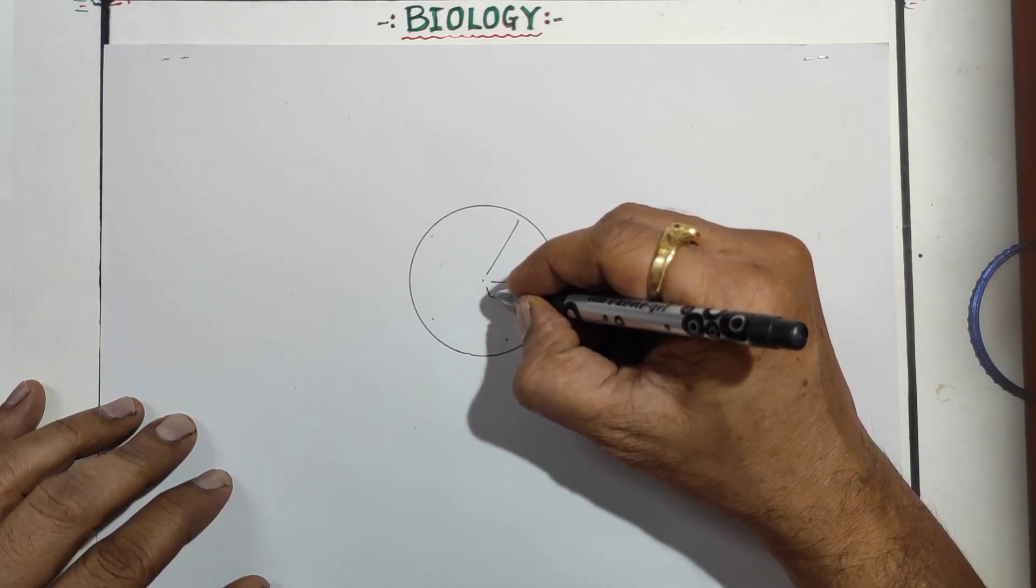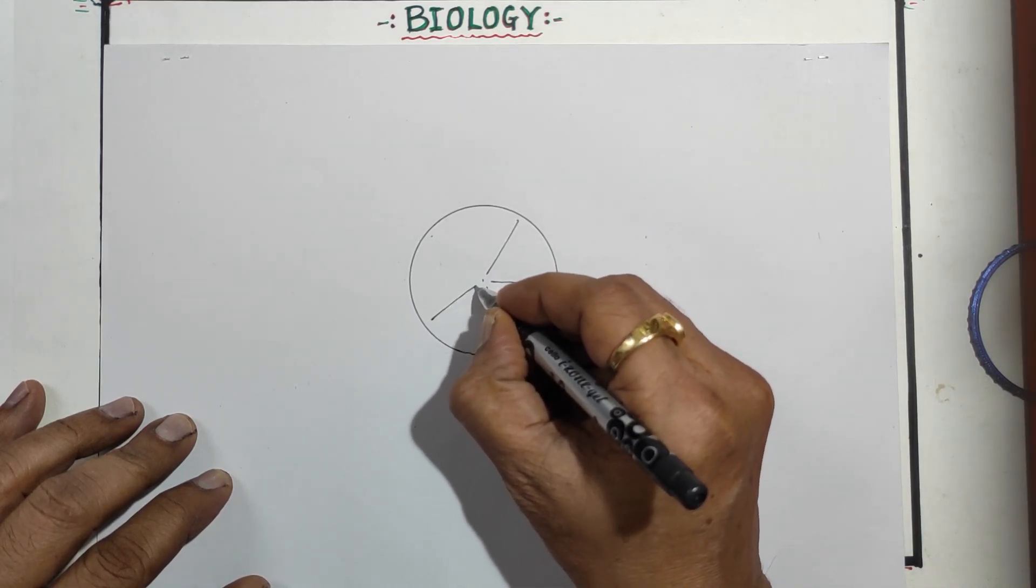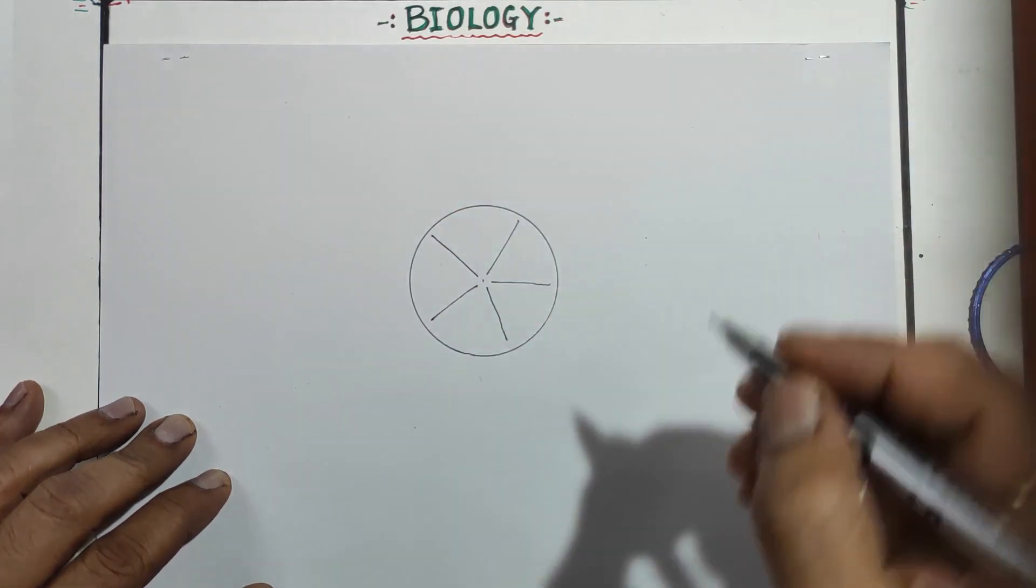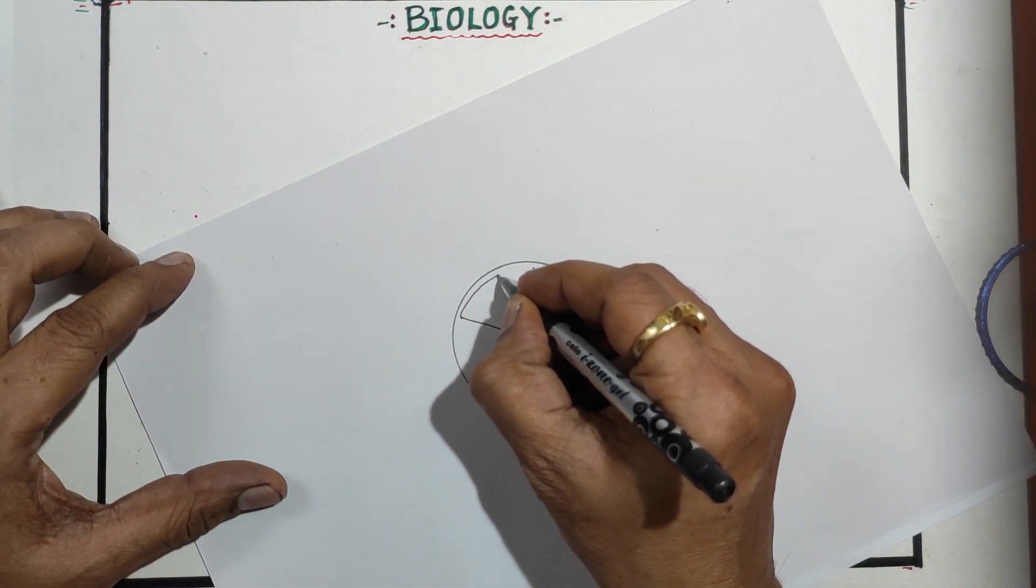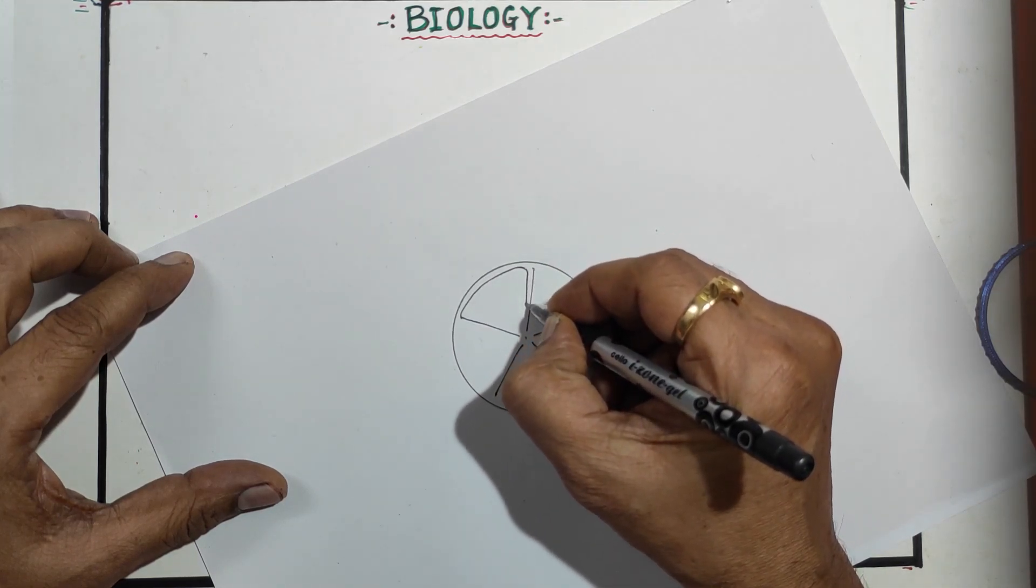From here draw a third line. You can use the scale also, no problem. Here and this is one more line. Now simply you just have to go on continuous like that. Don't touch this line, draw parallel to this and touch here.